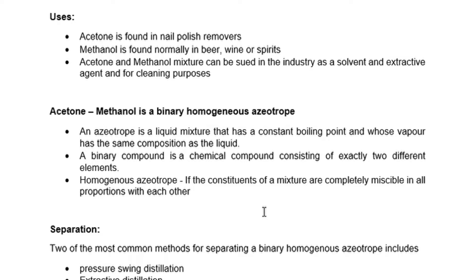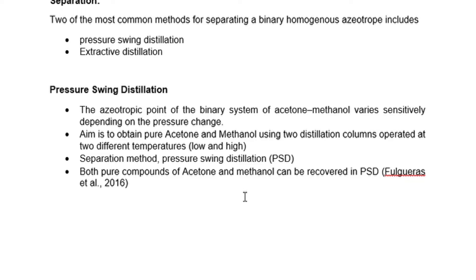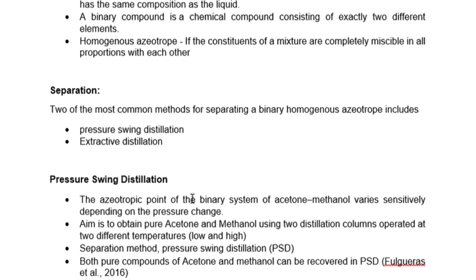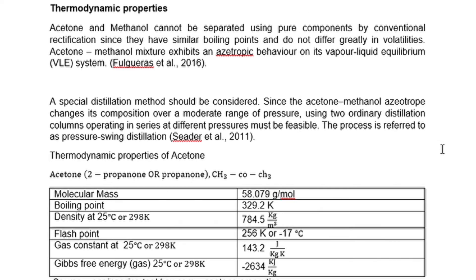A binary compound is a chemical compound consisting of exactly two different elements. Separation of these two can be achieved using pressure swing distillation or extractive distillation. For pressure swing distillation, it's important to note that azeotropic points of the binary system of acetone and methanol vary sensitively depending on pressure changes. The aim is to achieve pure acetone and pure methanol using two distillation columns operated at two different pressures — the first at low pressure and the second at high pressure. Research has proved that pure compounds can be achieved using this method.